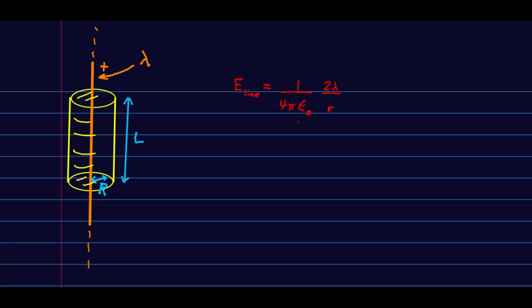That's what this little r is. And the E field, we know, points radially outward everywhere. Now think about what that means. That means it is tangent to these ends, and it's perpendicular to the sides of this cylinder.